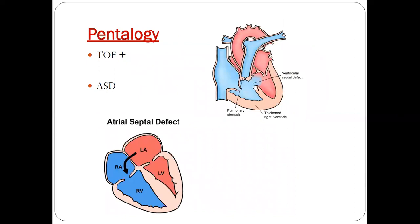Pentology of Fallot contains all the components of tetralogy of Fallot — that is, right ventricular hypertrophy, pulmonary stenosis, ventricular septal defect, and overriding of aorta — along with an atrial septal defect. When ASD is also present, it is called pentology of Fallot.